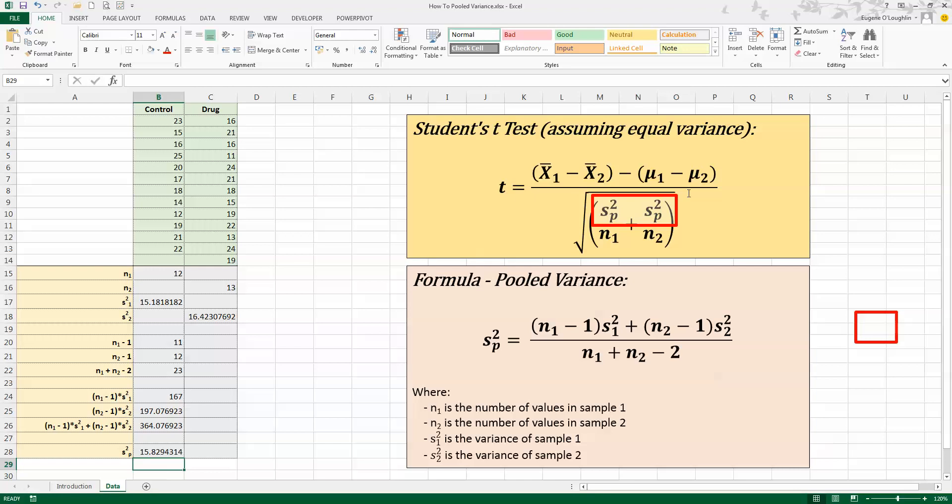So that then becomes the value that I insert in my t-test formula up here in the brown box. I put that in twice for the bottom half of my formula here and in that way then I can calculate my t-statistic to compare the means of the control group and the drug group using the student t-test. So that's how you calculate pooled variance in Excel. I hope you found this video useful. Thank you for your attention.